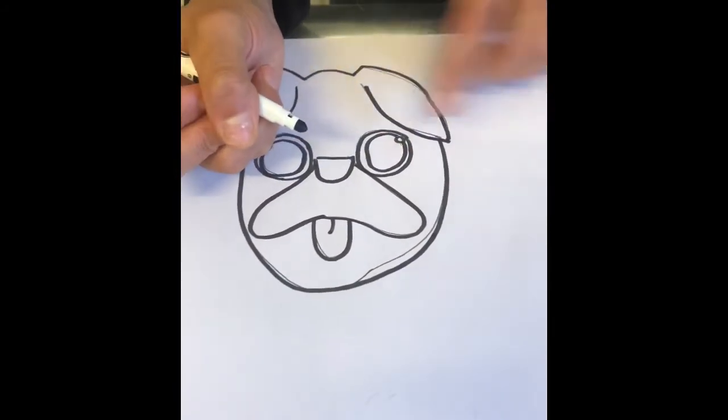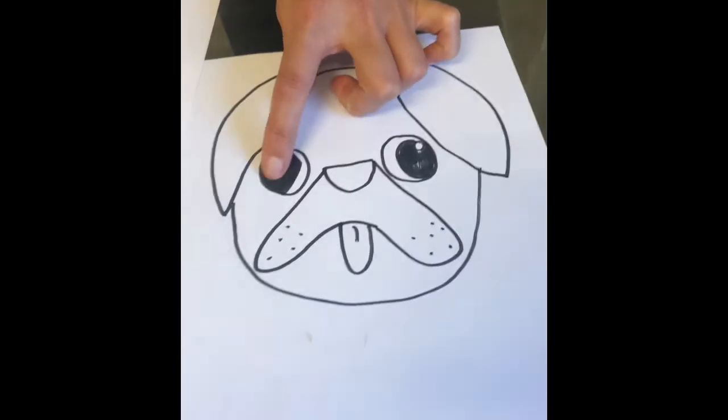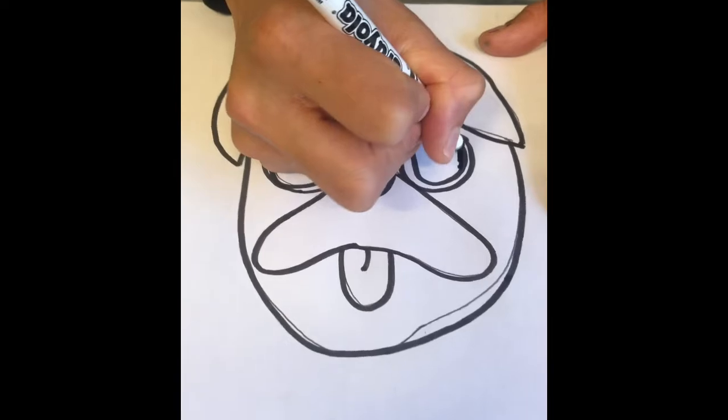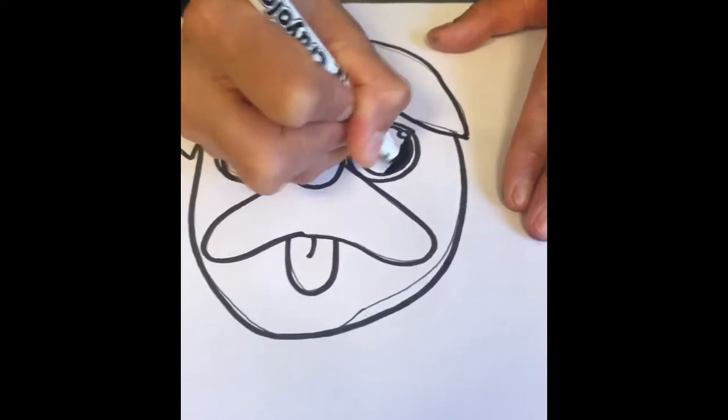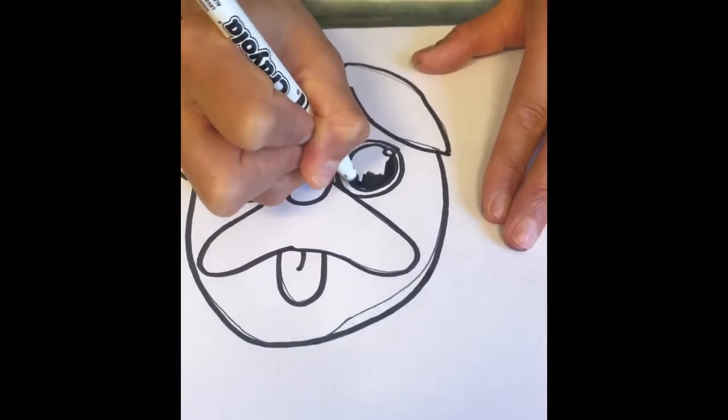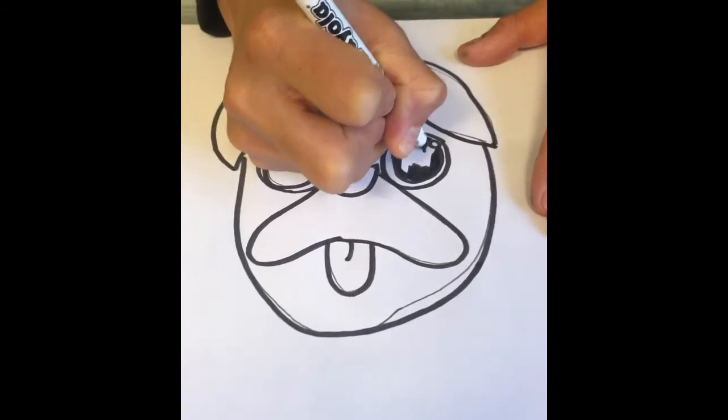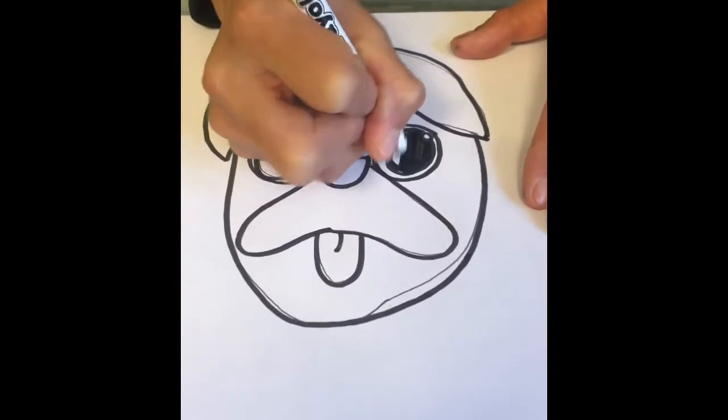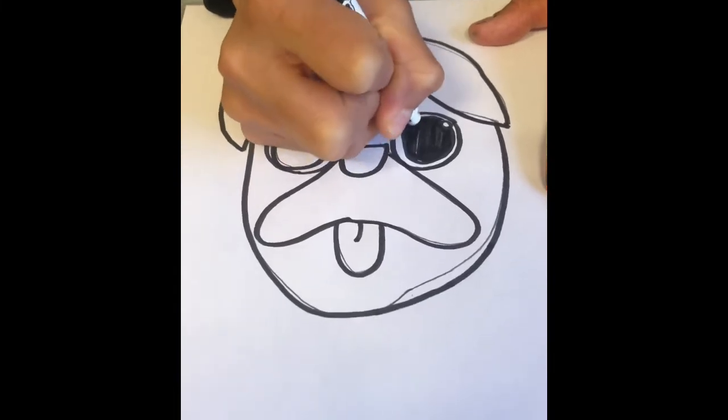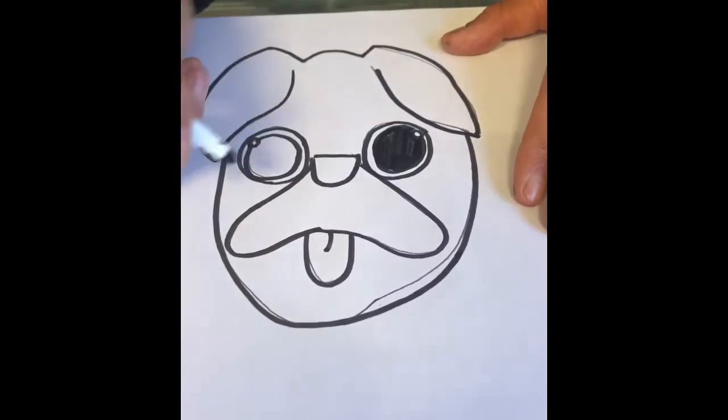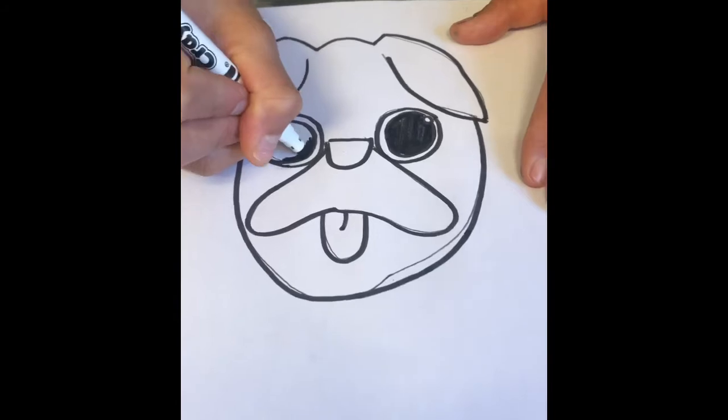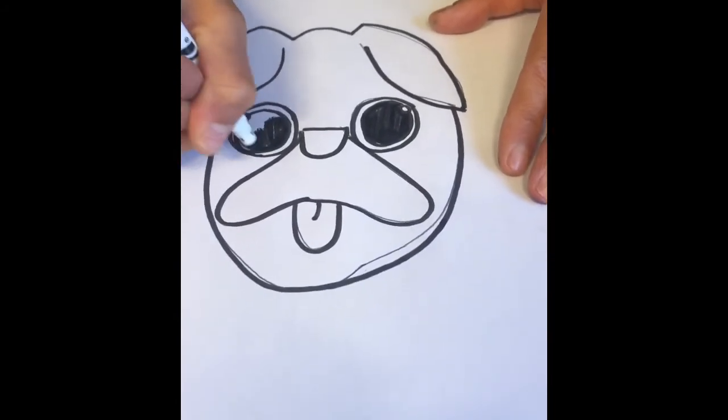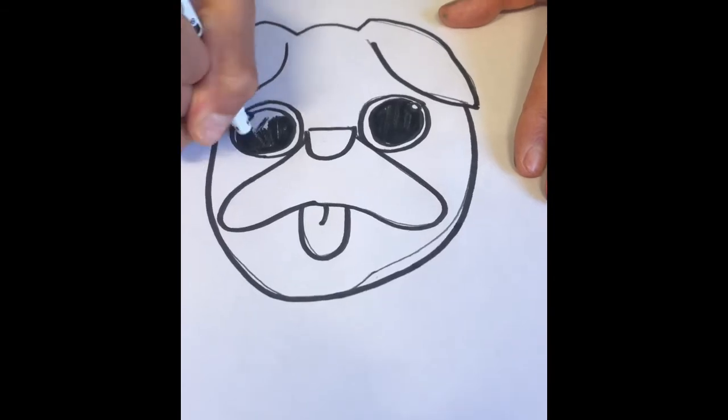Now to do the inside of the eye, this part boys and girls, we're going to get to do some coloring now. I'm going to get my pen and color the inside of the circle. I'm just using a black felt tip pen.